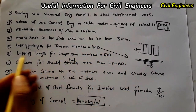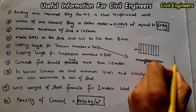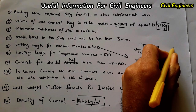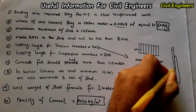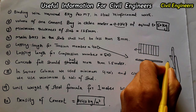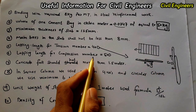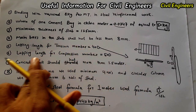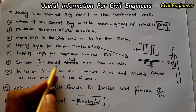For a compression member — such as in a column — the lapping length is 50d, where d is the diameter of the steel being used in the compression zone. So to summarize: lapping length for tension member is 40d, and lapping length for compression member is 50d.